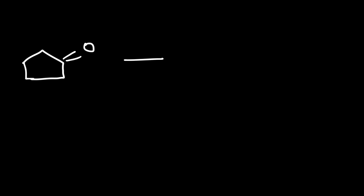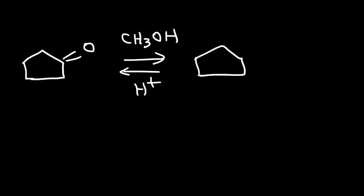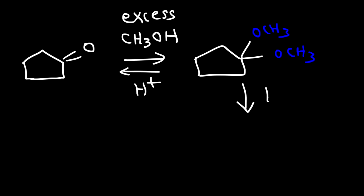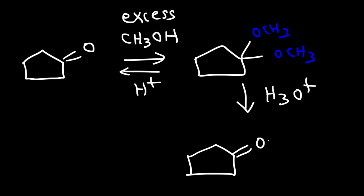Let's say we have a cyclic ketone. Go ahead and predict the major product if it reacts with methanol under acidic conditions. This can go all the way to an acetal if we use excess methanol, so we can get two OR groups. And if we react with H3O+ we can regenerate the original ketone.